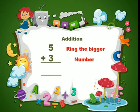First, you ring the bigger number. In these two numbers, which is the biggest number, children? Yes, 5 is the biggest number. You circle that number first.